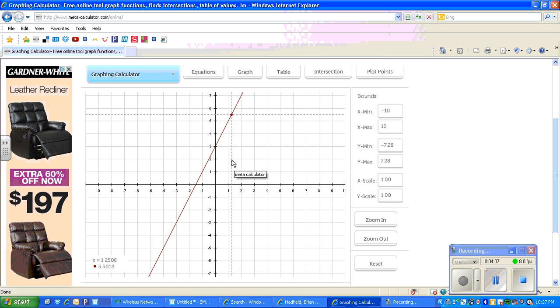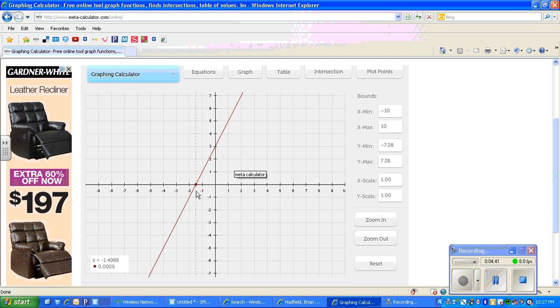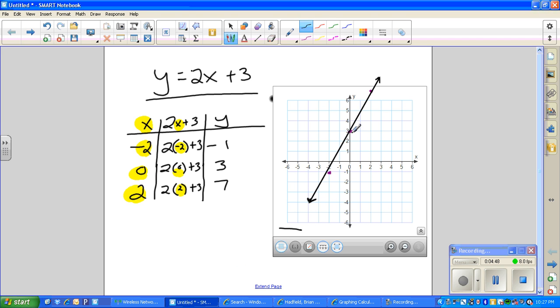Zoom around. You notice that it falls right there at 0, 3. It has another point over here at about negative 1 and a half on the x. And if I take a look at the one we graphed, 0, 3. And again, about 1 and a half, negative 1 and a half right there. So I think I've graphed it correctly.